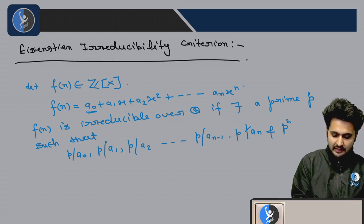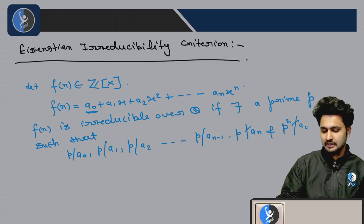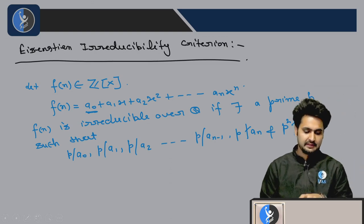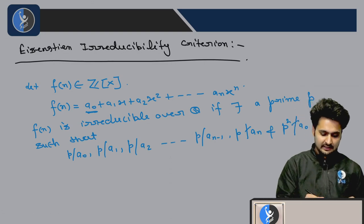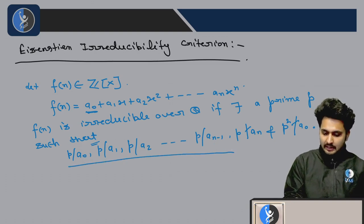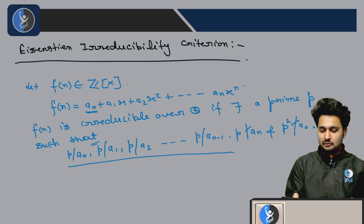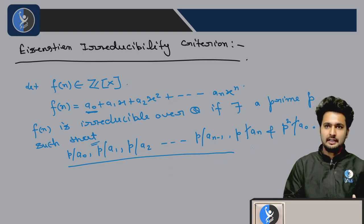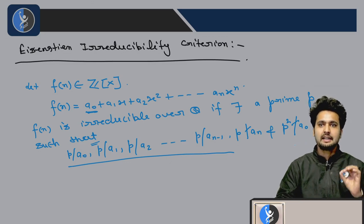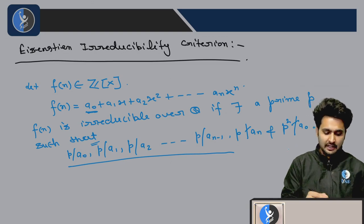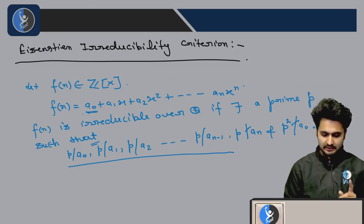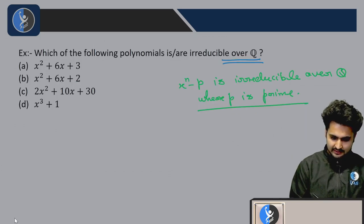And if I square p, p squared should not divide the constant coefficient. p squared not divides a_0. Then f(x) is irreducible over Q. This is the Eisenstein criterion.